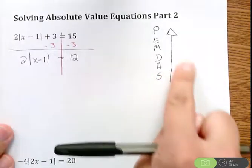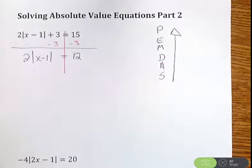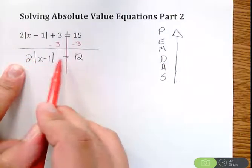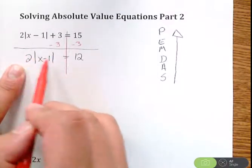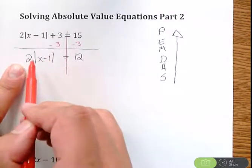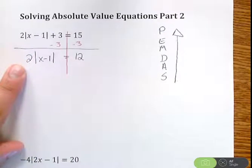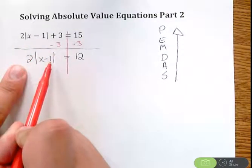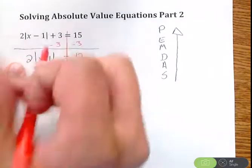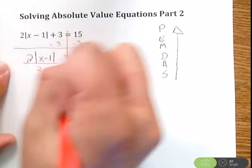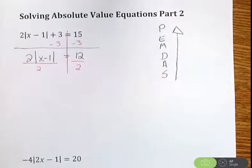Okay, so I got rid of the addition subtraction, now we got to get rid of multiplication division. So I have this 2 out front. We can't distribute this. Absolute values you cannot distribute through. They're not like typical parentheses, they're close but not exactly the same. So I can't distribute it, but this is being multiplied here. So the opposite of multiplying is let's go ahead and divide each side by 2.